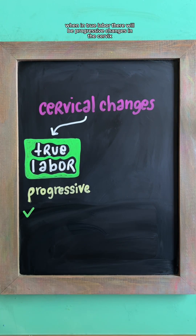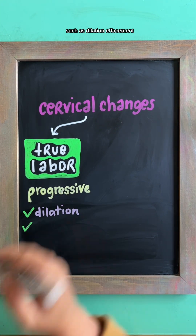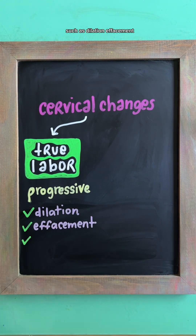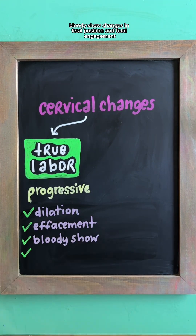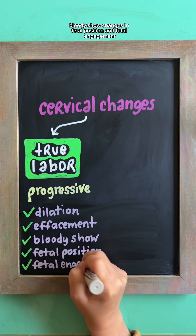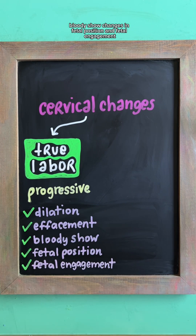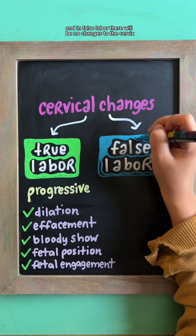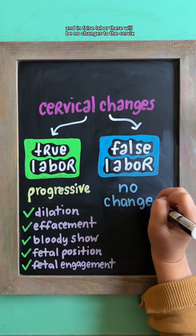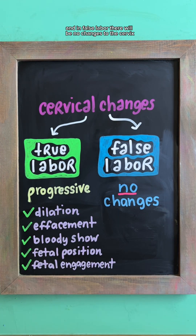When in true labor, there will be progressive changes in the cervix, such as dilation, effacement, bloody show, changes in fetal position, and fetal engagement. And in false labor, there will be no changes to the cervix.